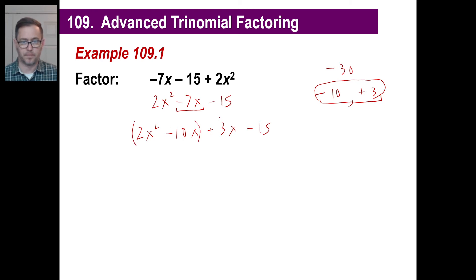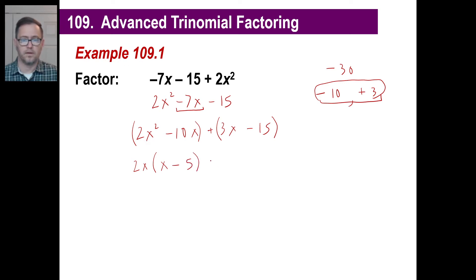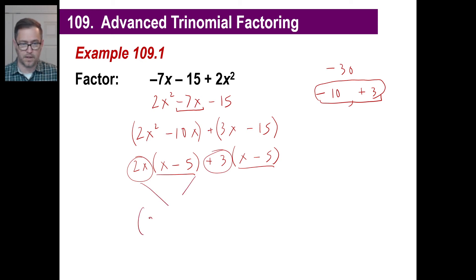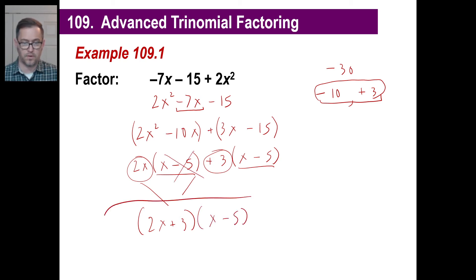Now let's clump and factor. From the first group, 2x squared and negative 10x, we pull out 2x. That leaves x minus 5. From the second group, 3x and negative 15, we pull out 3. That leaves x minus 5 as well. Both groups share the common factor x minus 5, so we combine: the answer is (2x + 3)(x − 5). You can always verify by multiplying out and collecting like terms.